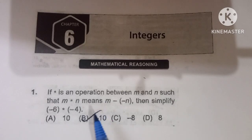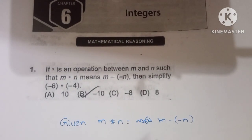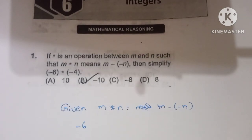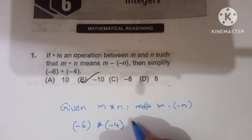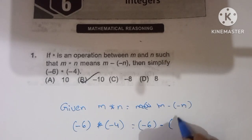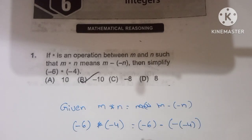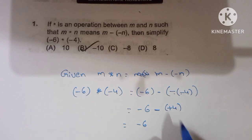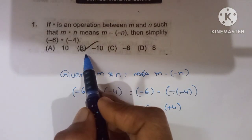We have to find the value of minus 6 star minus 4. Given m star n equals m minus of minus n. So minus 6 star minus 4 equals minus 6 minus of minus 4, which is minus 6 plus 4. Minus of plus is minus, so minus 6 minus 4, which is minus 10. So option B is the correct one.